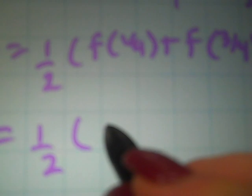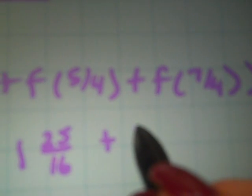f of 1 fourth is 1 and 1 sixteenth. And if you add those up, you will get the approximation for the midpoint Riemann sum.